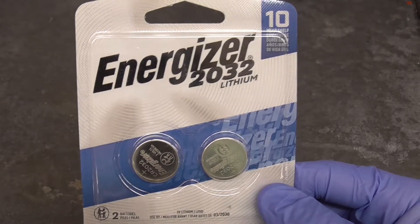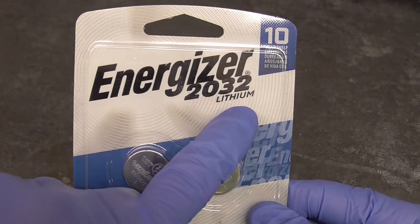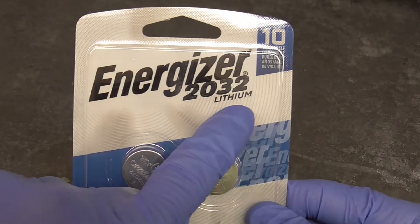Many button batteries or coin batteries, like the ones you see here, contain the metal lithium. I decided to see if I could extract the lithium from batteries and do some experiments with it.